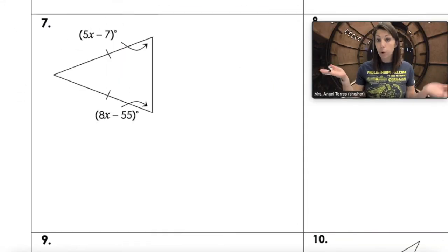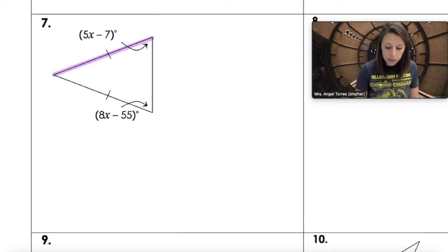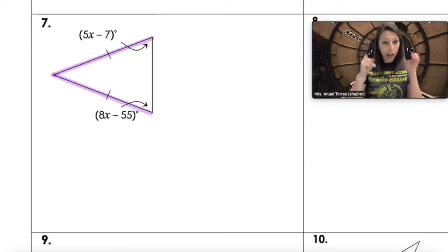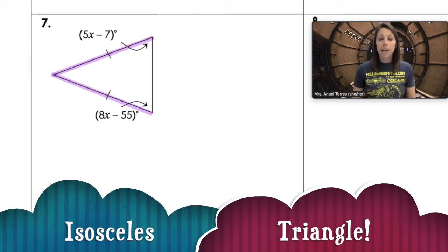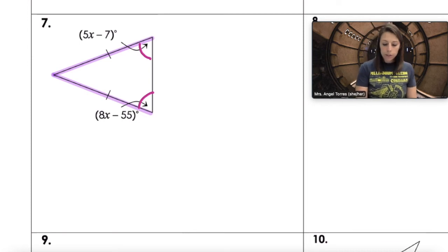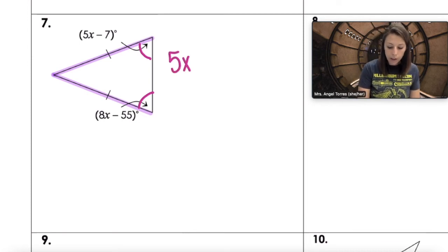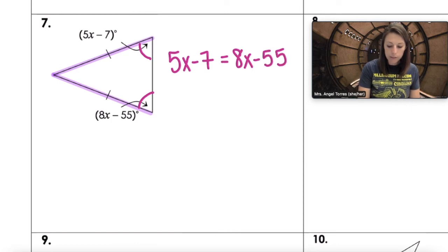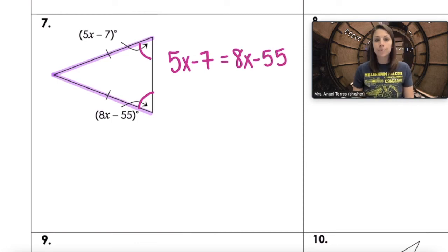Number seven: we're given two congruent sides, so we're thinking isosceles. If the two legs of an isosceles triangle are equal, the two base angles are also equal. So our equation is 5x minus 7 equals 8x minus 55. Finish solving that one on your own.